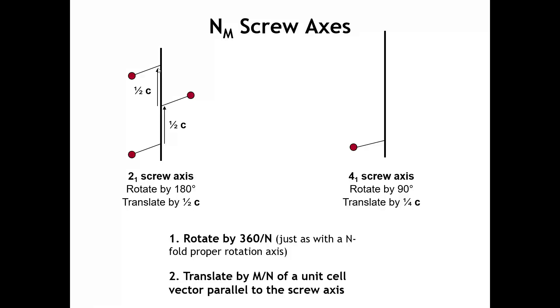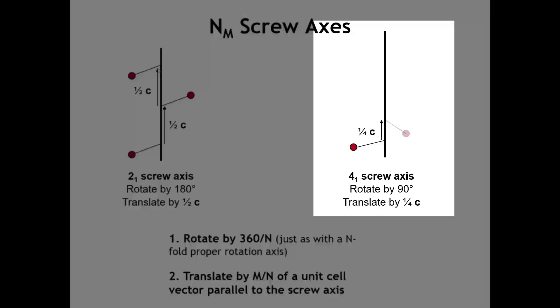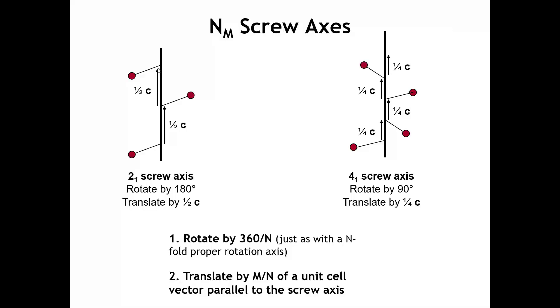Looking at the 4 sub 1 screw axis, the rotation is 90 degrees and the translation is one fourth of the C lattice vector per operation. After four applications, we've translated up by one unit cell. You can see why it's called a screw axis — it gives a kind of chirality like a screw. For a 2 sub 1, that's the only screw axis with 2 as the main number. But for a 4-fold screw axis, we can have 4 sub 1, 4 sub 2, or 4 sub 3 — all with 90 degree rotation but differing in the length of the translation.